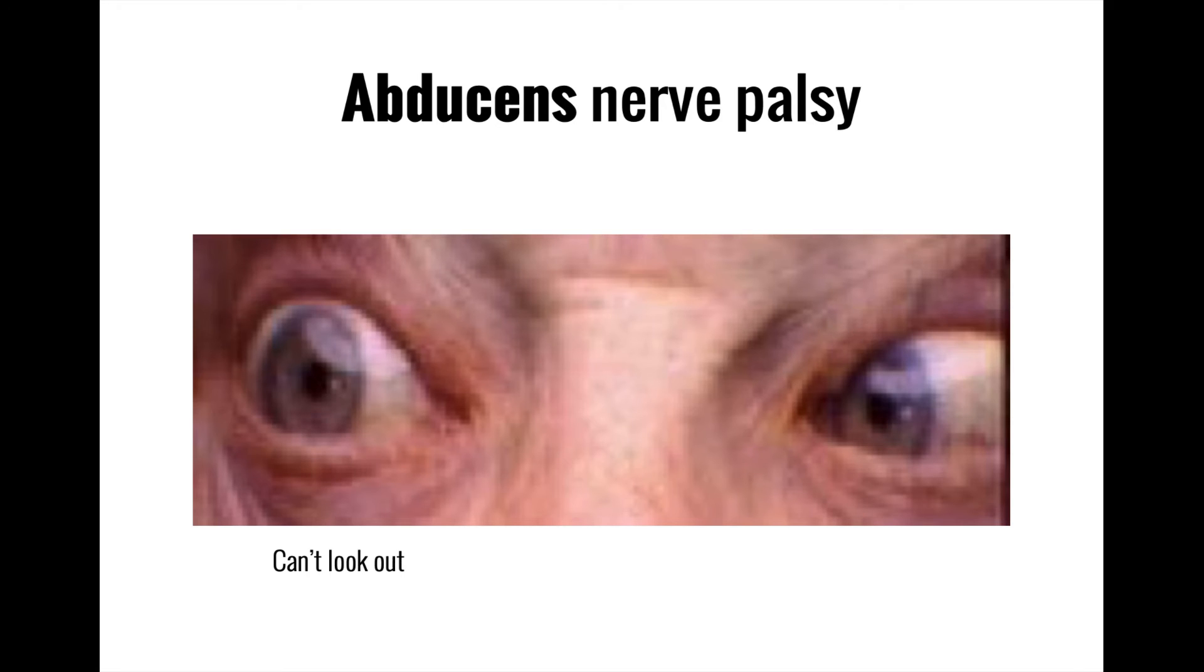Finally, loss of the abducens nerve is probably the easiest to understand, as its associated muscle, the lateral rectus, performs a simple function, pulling the eye outward towards the ear. For this reason, an abducens nerve palsy results in an eye that drifts inward by default and cannot be pulled outward towards the ears.